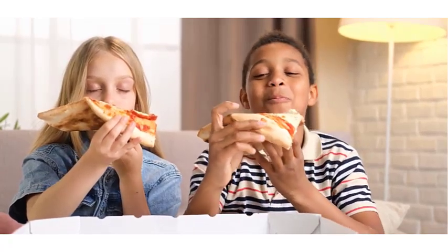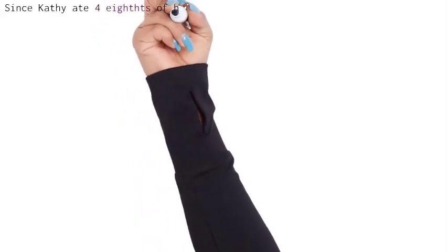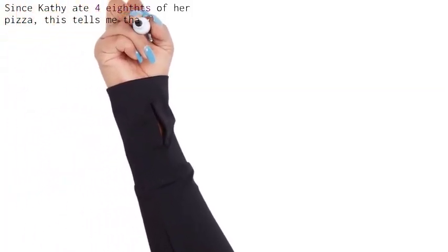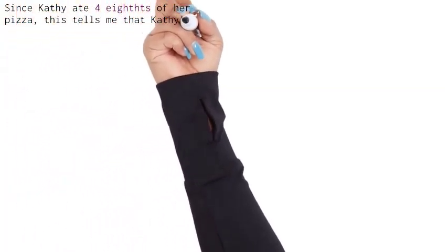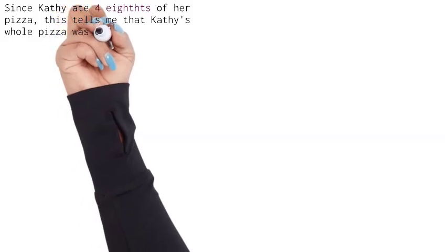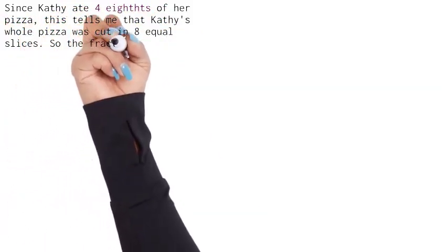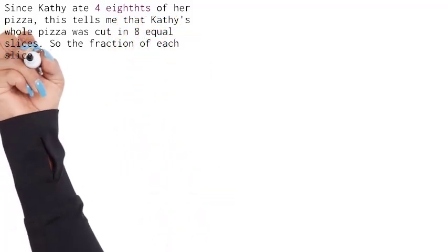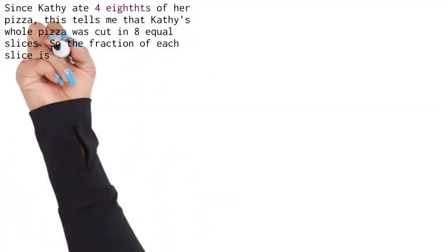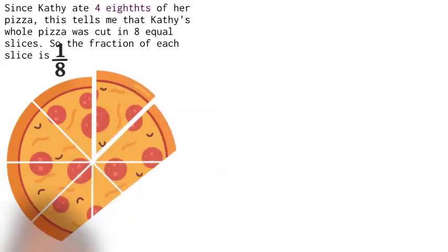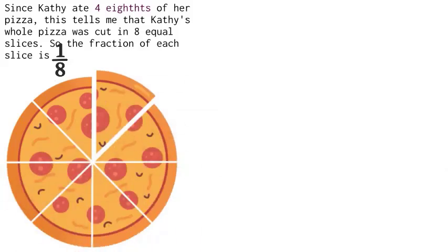Since Kathy ate four eighths of her pizza, this tells me that her pizza must have been cut into eight equal slices. Now if it's cut into eight equal slices, that means each fraction would be one eighth. Here's Kathy's pizza cut into eight equal slices, and each piece is one eighth.